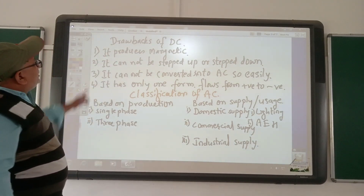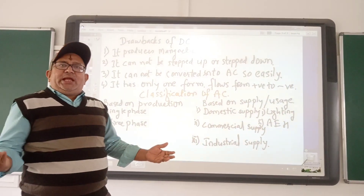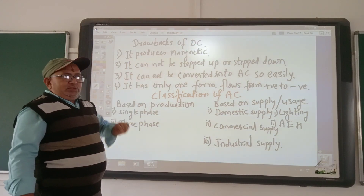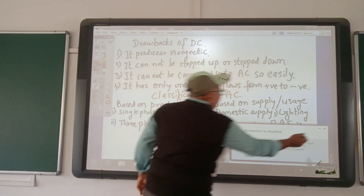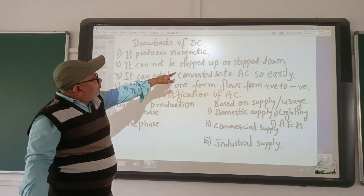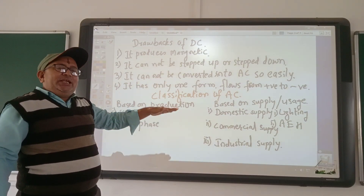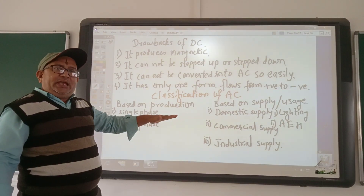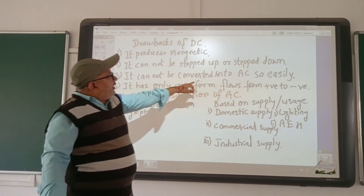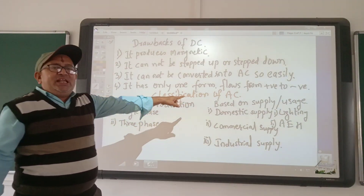Let us know the drawbacks of DC — why we cannot use DC in our everyday activities. DC produces a magnetic field, and because of this drawback, DC cannot be sent over long distances. It cannot be stepped up or stepped down. You cannot convert 12 volts DC to 5 volts or 3 volts, or bring it up to 120 volts. It cannot be converted into AC so easily.